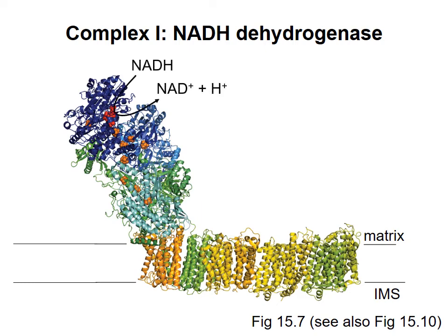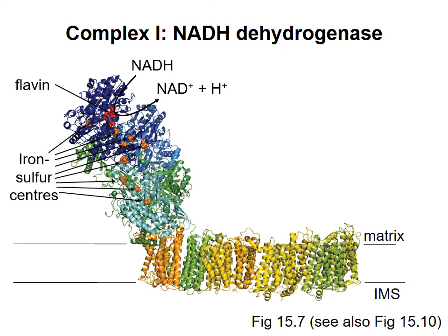NADH binds to a site on the matrix side of the membrane and gives up its electrons to electron-carrying cofactors embedded in complex 1. These include a flavin here and numerous iron-sulfur centers.